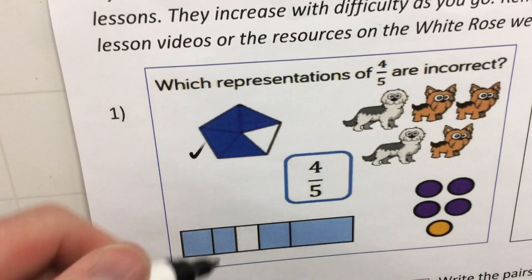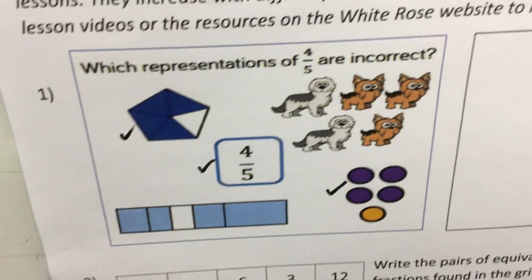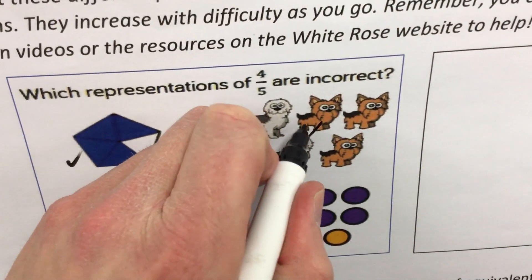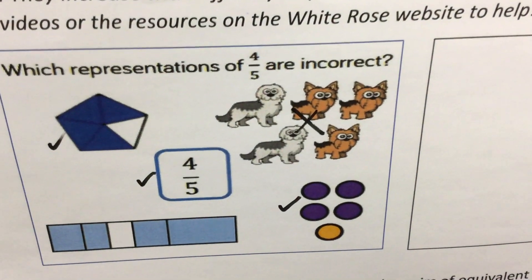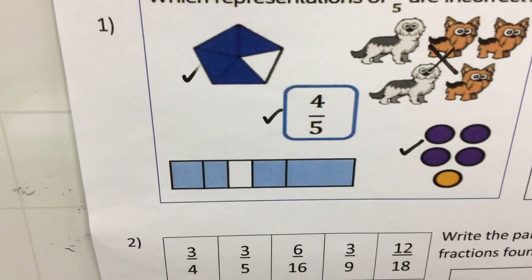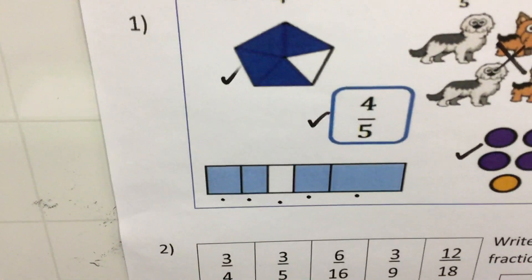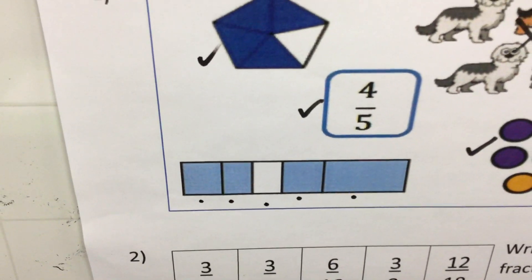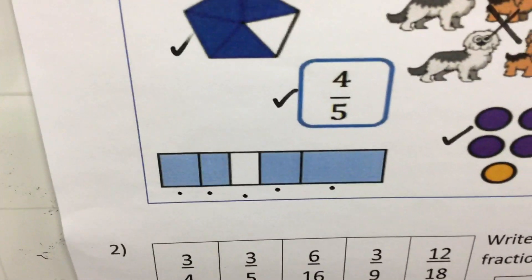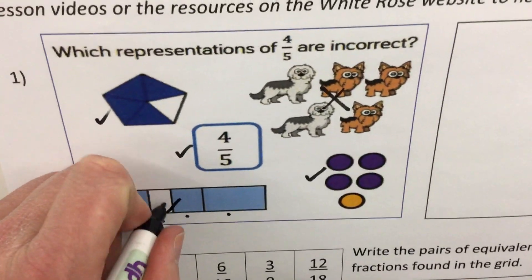Correct representations include four out of five shaded, the fraction written as four fifths, and four out of five counters are purple. However, three out of five dogs is incorrect. Also, although four out of five parts appear shaded blue, the parts of the bar are not equal — therefore that cannot represent four fifths, because we need four equal parts out of five. So those two are the incorrect representations.